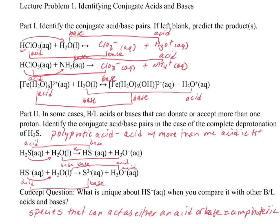This covers everything we're going to talk about regarding Bronsted-Lowry acids and bases. The key things are: being able to identify the conjugate acid-base pairs and identify an acid and a base from the proton transfer; understanding polyprotic acids, where an acid with more than one acidic proton loses them in stepwise fashion — for example phosphoric acid has three protons coming off in three steps; and the concept of amphoteric species, which can act as either an acid or a base depending on whether they're in the presence of an acid or a base. In the next video, we'll talk about relative acid strengths and how to use an acid strength chart to make predictions about these reactions.